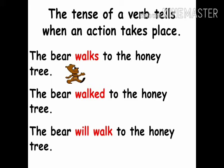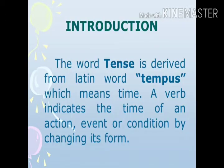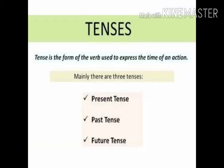Third: 'The bear will walk to the honey tree.' Here, the verb 'will walk' is in the future tense. It tells us that the action will take place in the future. Isse hum Hindi mein bhavishy kaal kehte hain — jo hone waala hai. The word tense is derived from the Latin word 'tempus', which means time. A verb indicates the time of an action, event, or condition by changing its form. Tense tells us when the action is going to happen.